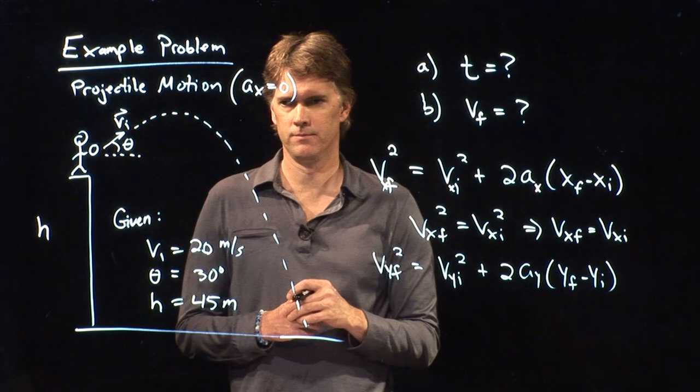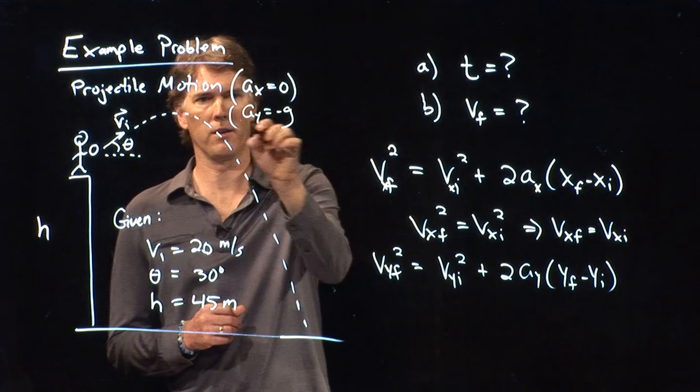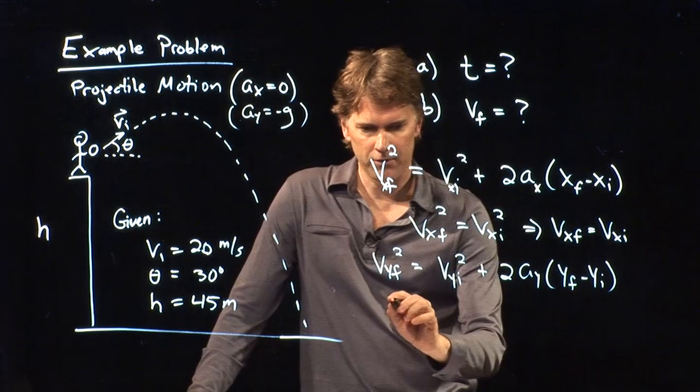Negative 9.8 meters per second squared. As soon as we let go of the thing, it's just gravity. So we know that, and so we can calculate vy final.